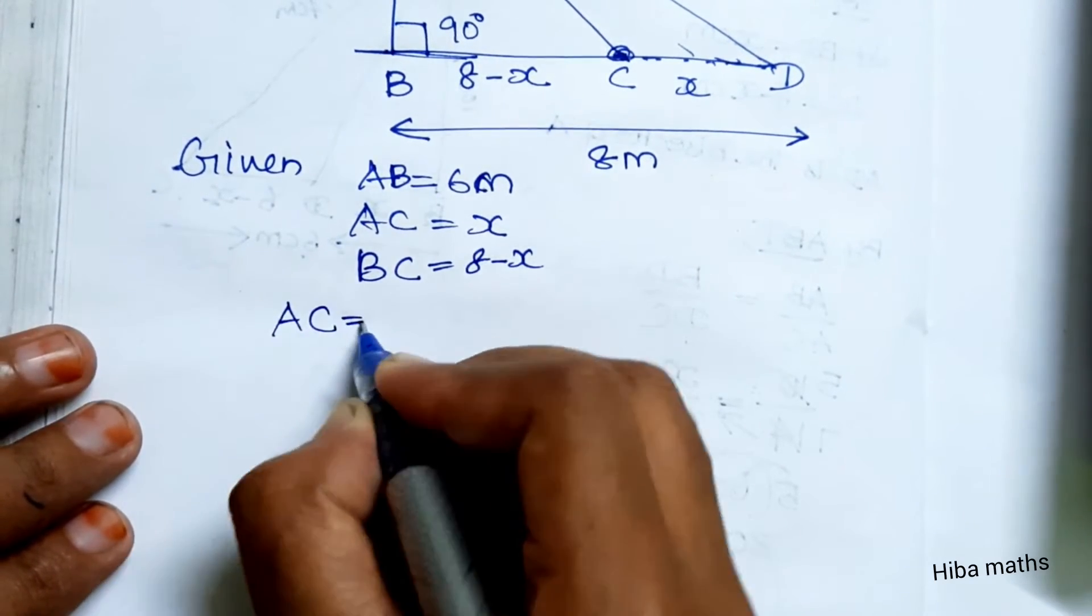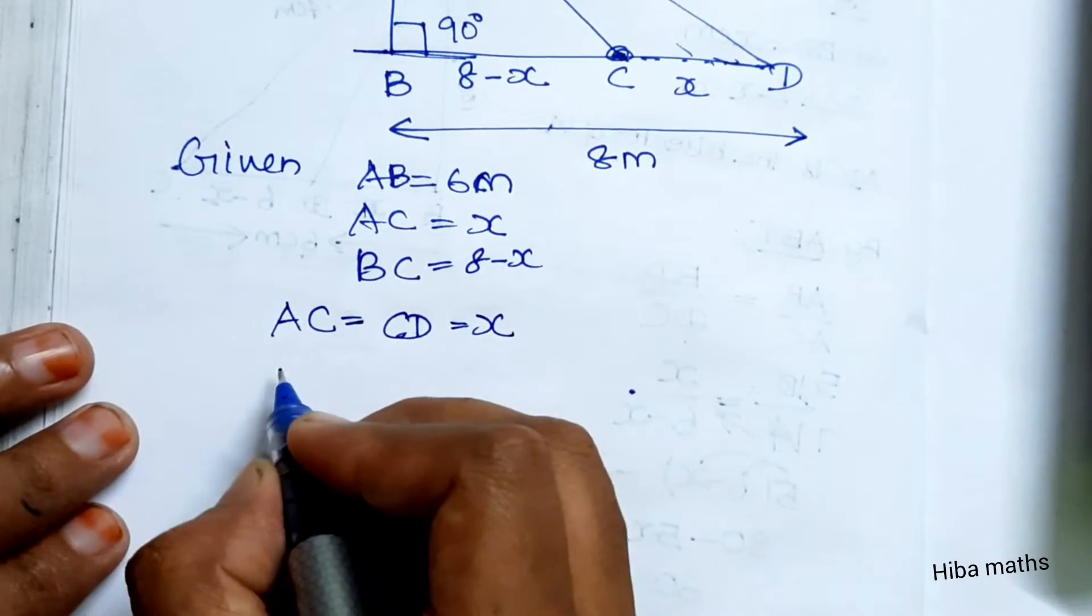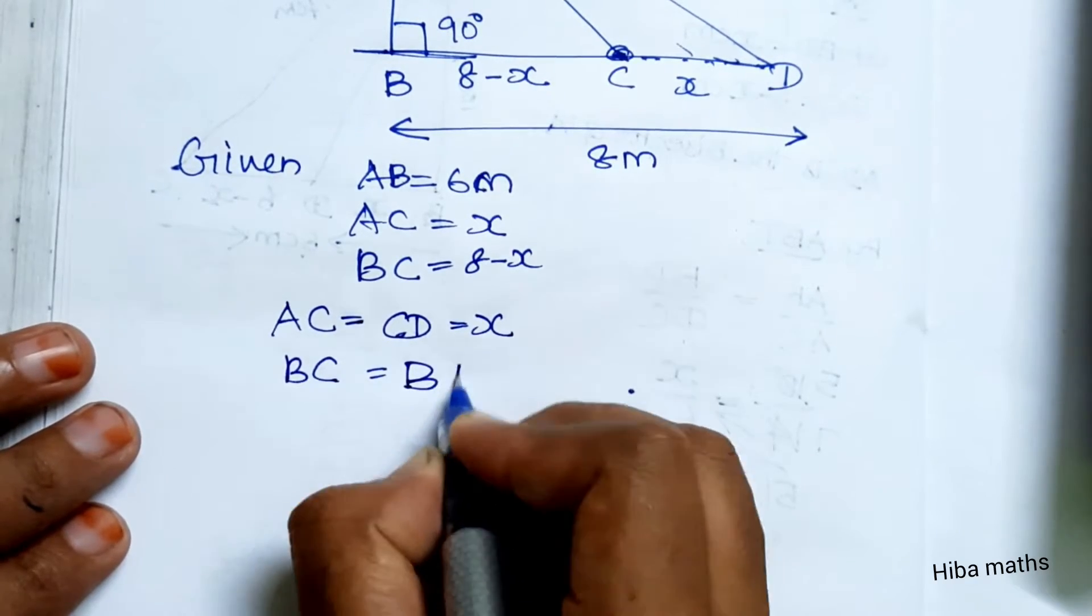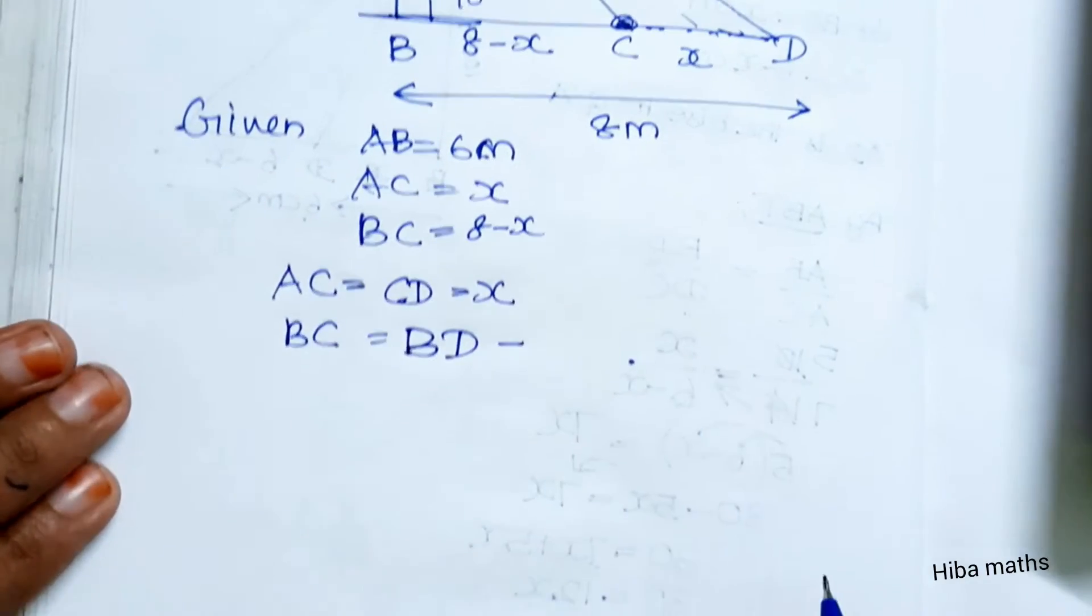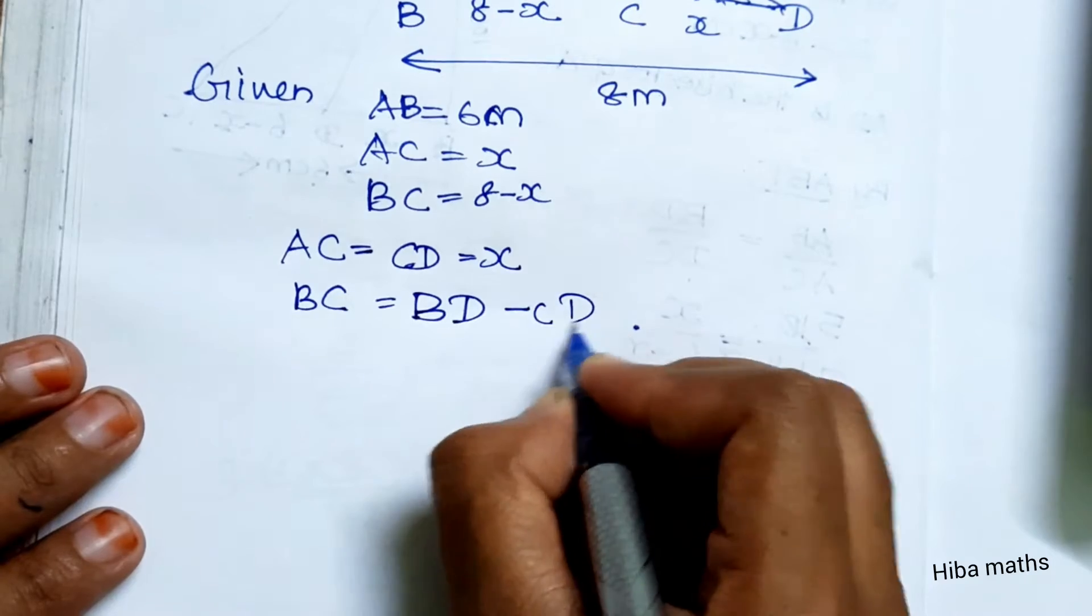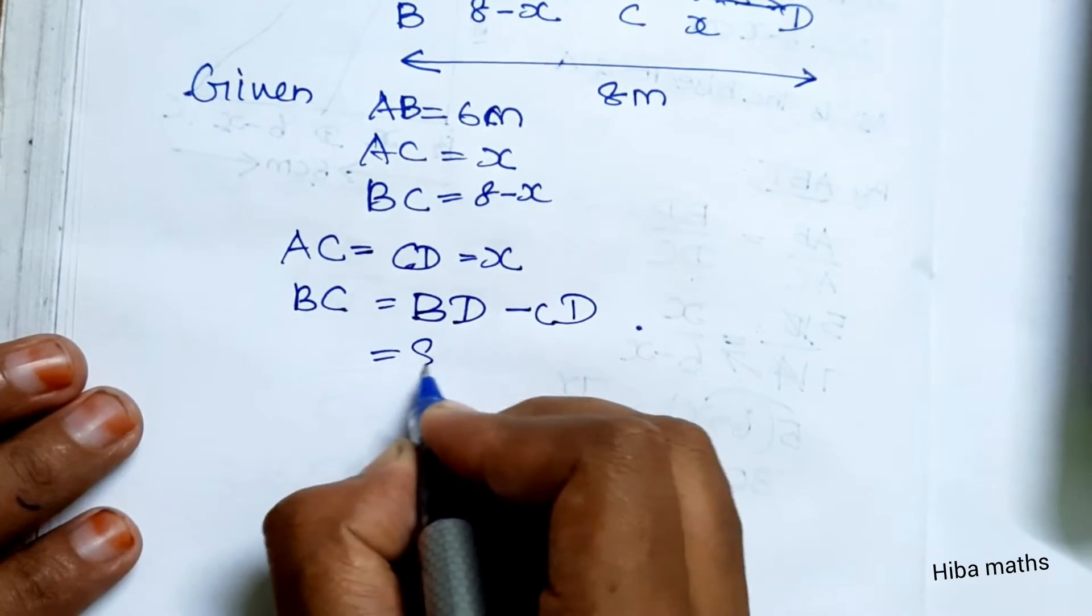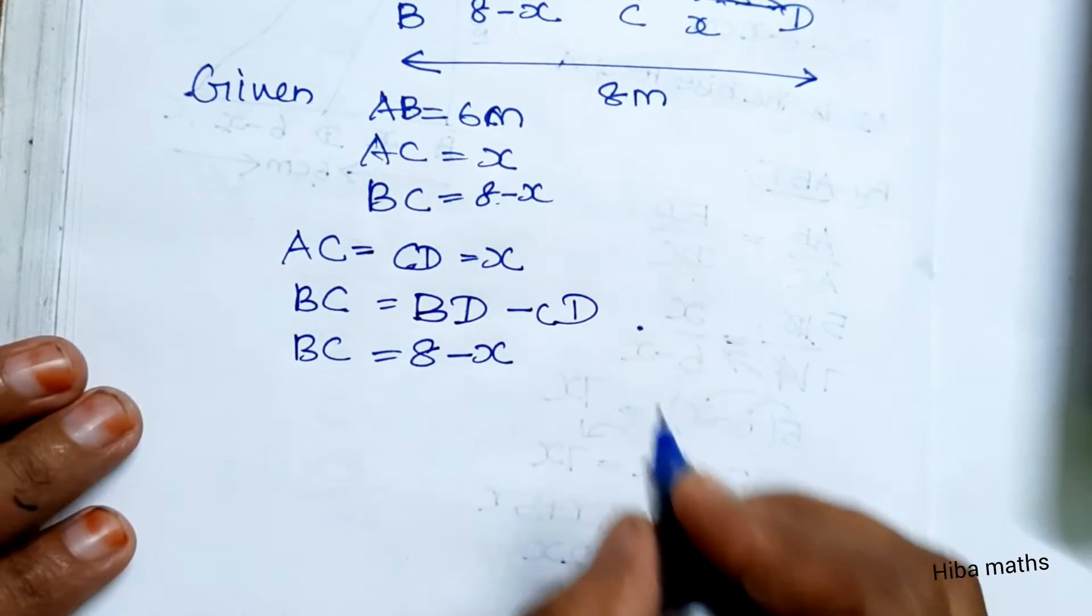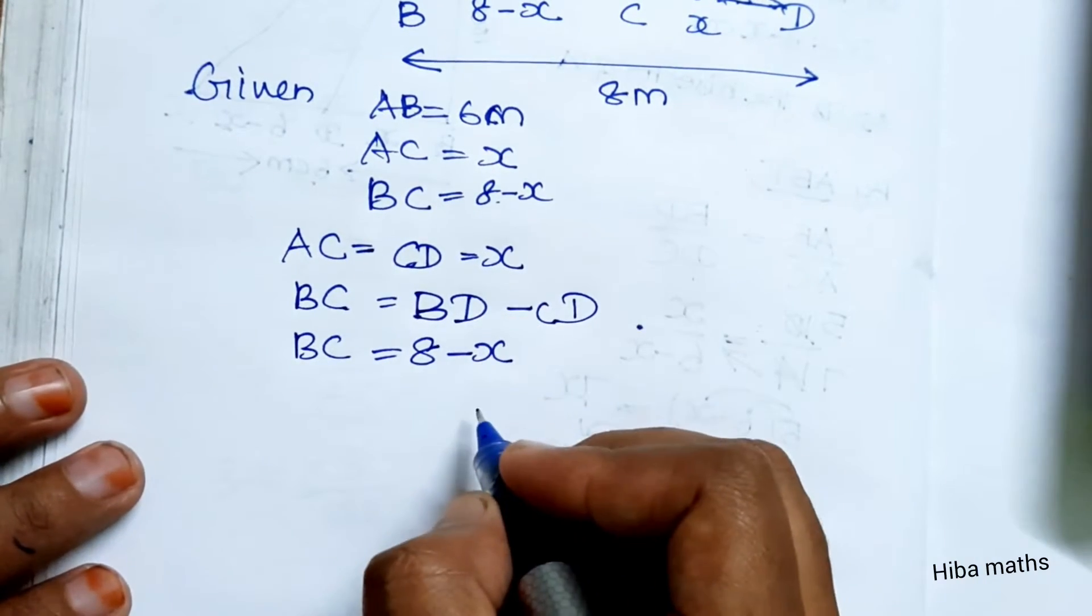Given AC is equal to CD, which equals x. So if we write BC, we write the full length BD minus CD. The full length is 8 minus CD which is x, so BC is 8 minus x.